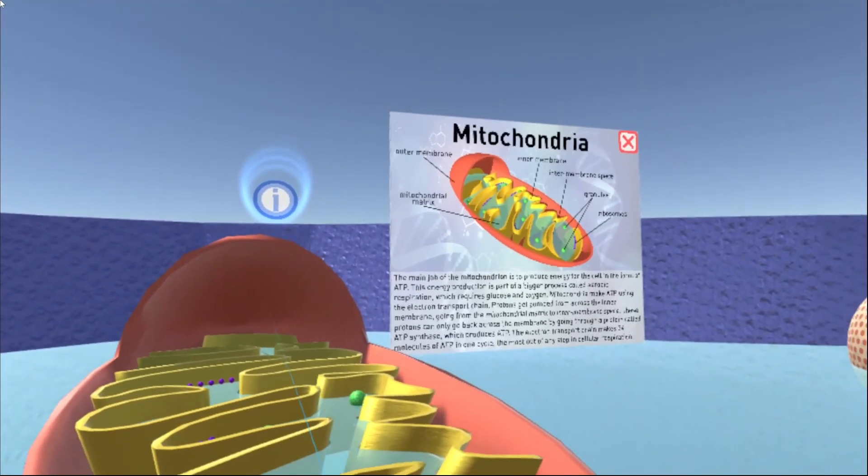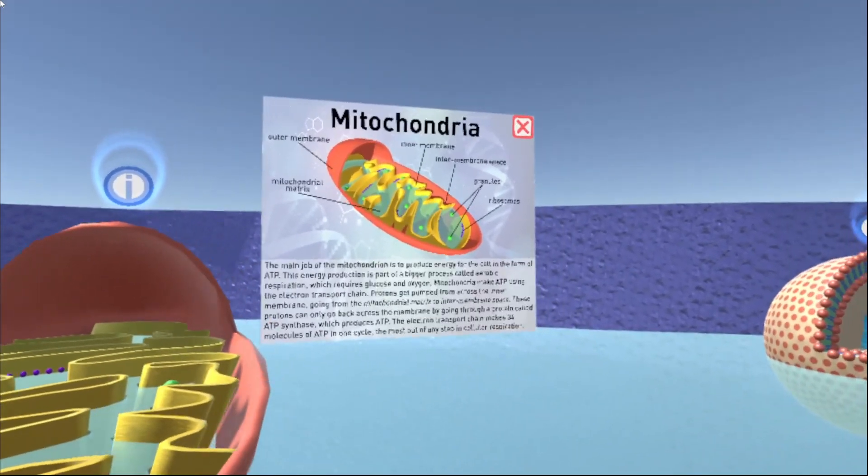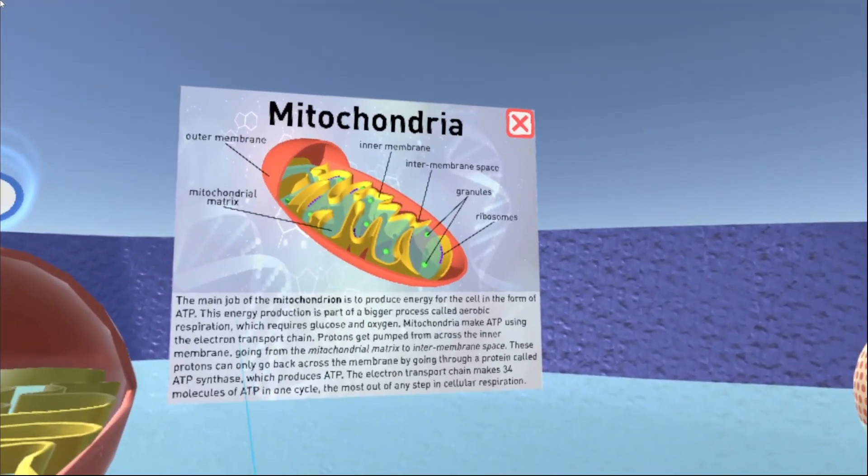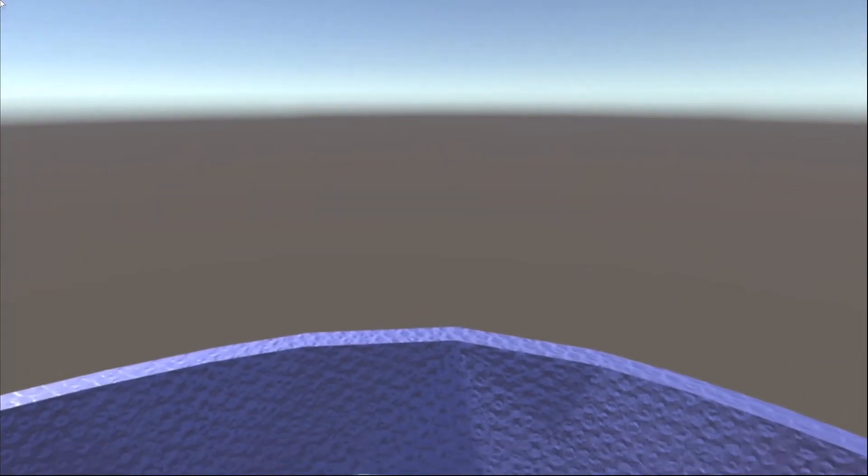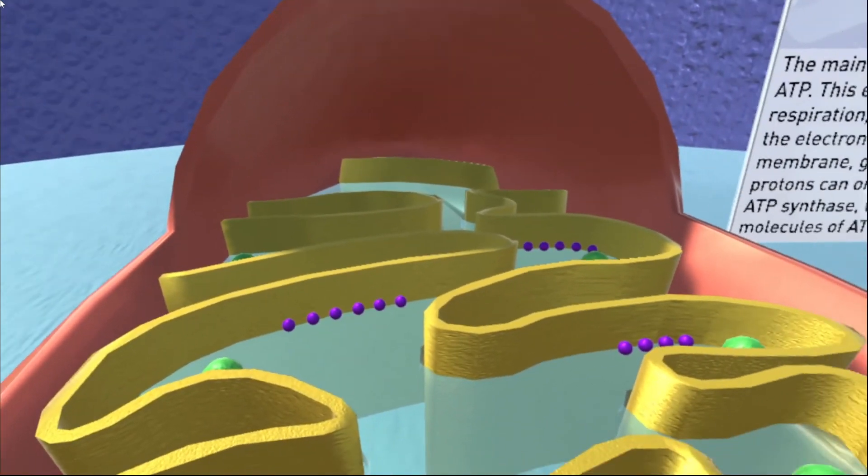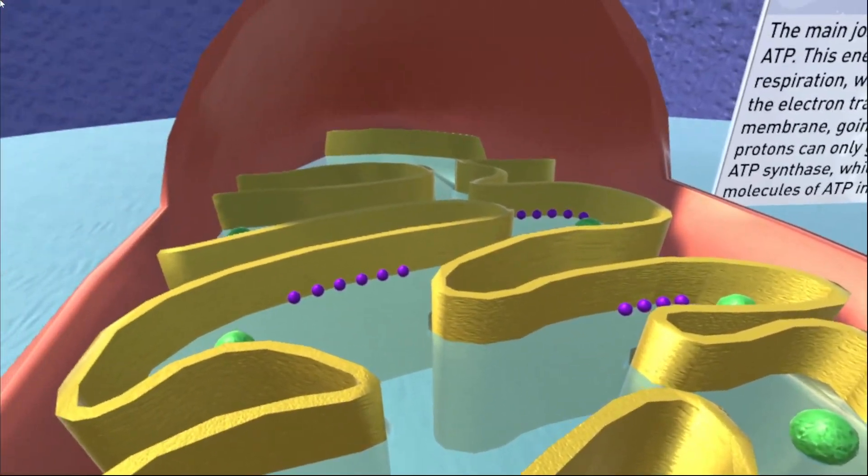Let's go check out a few more over here. We've got a mitochondrion right here. Again, same labeled diagram as well as a brief description. And we can hop up in here and get nice and up close and personal with it.